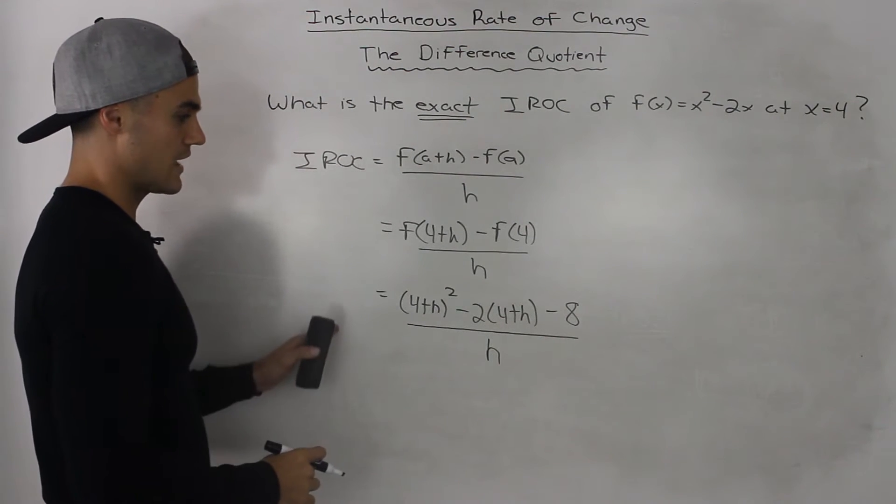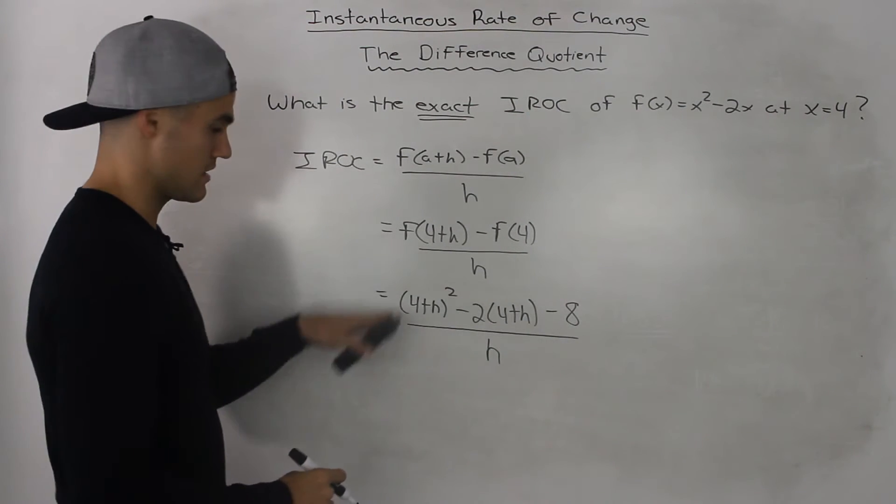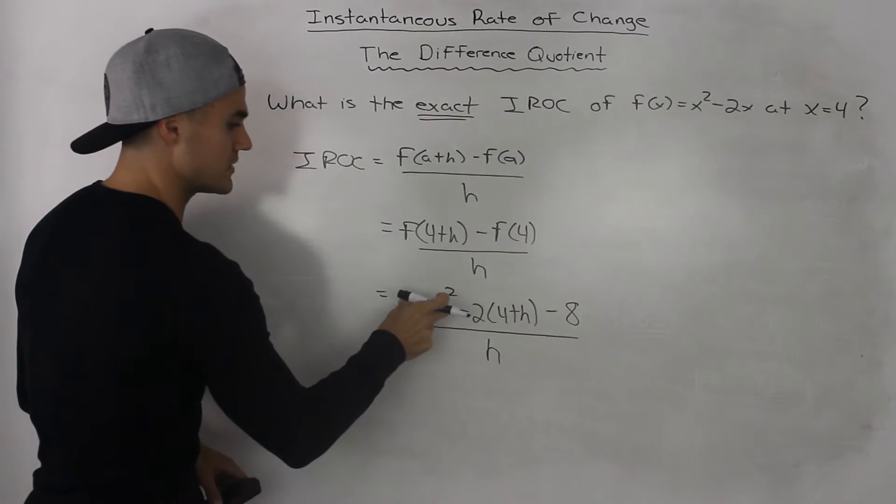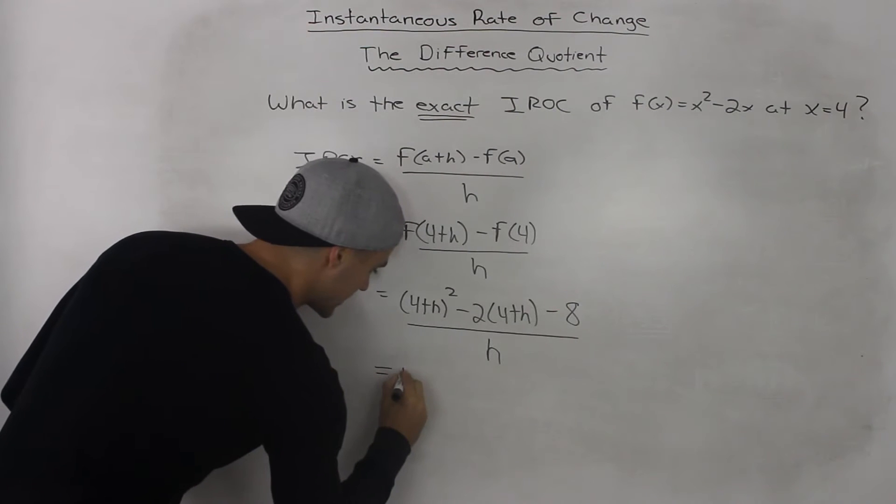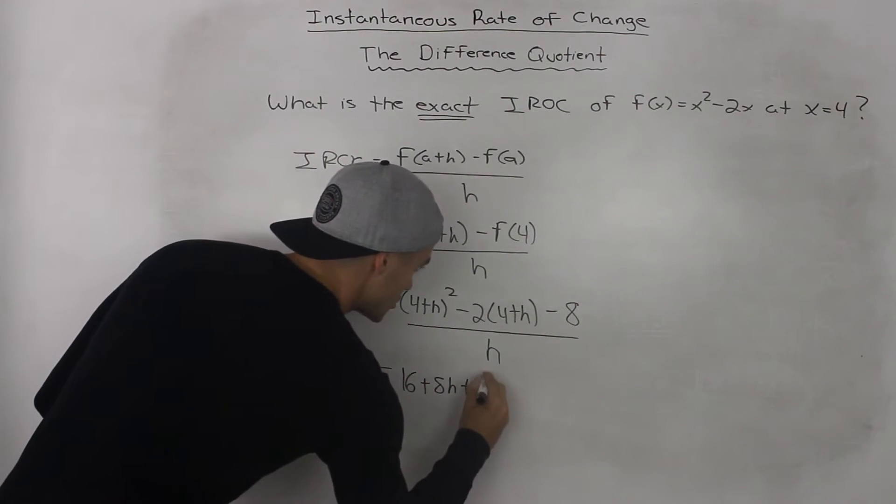So now what we have to do is we have to algebraically simplify the numerator. So if we take 4 plus h squared, so 4 plus h times 4 plus h and we foil it, we would get 16 plus 8h plus h squared.